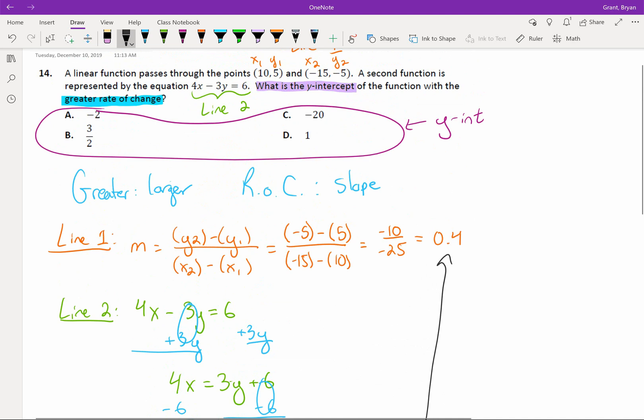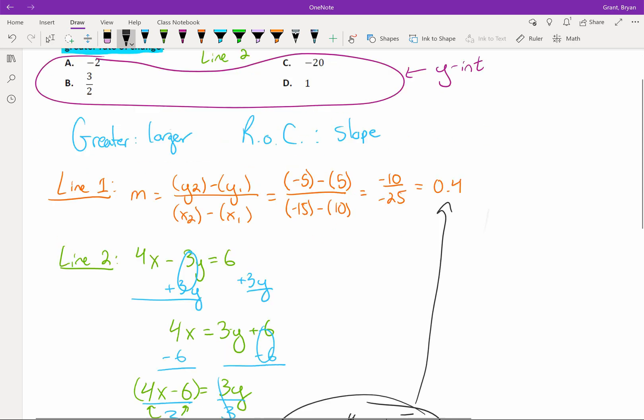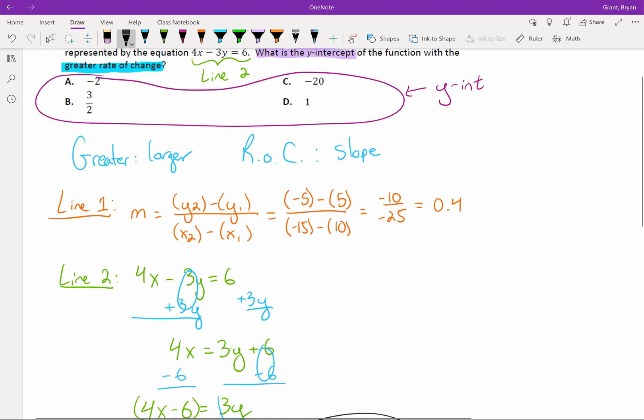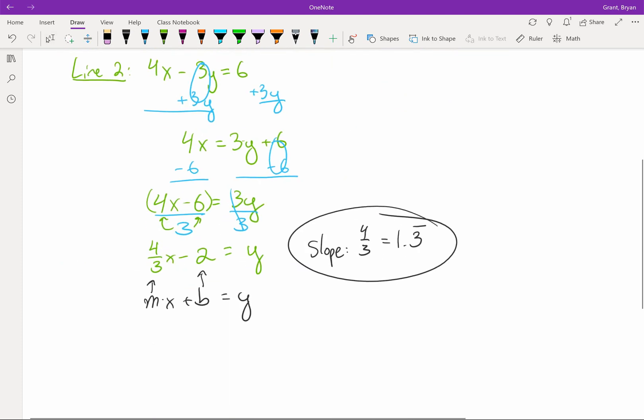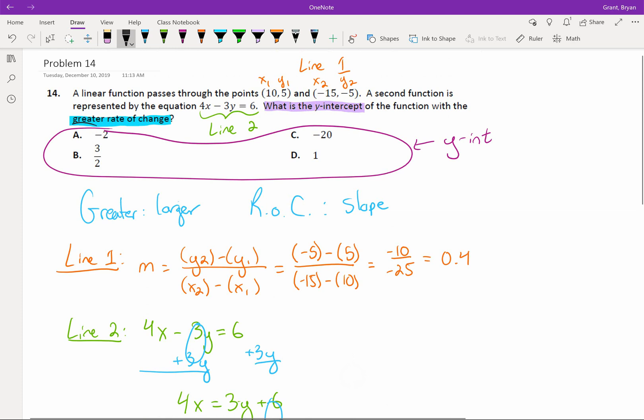So, am I done? We need to take a look at this, and realize that the y-intercept is what's being asked for of the function with the greater rate of change. The greater rate of change is the bigger slope. We found the bigger slope. And now we just need the y-intercept, as my dog squeaks away at a squeaky toy in the background. The y-intercept is found in this equation right here. The other reason that it was useful to isolate y is because it told us the y-intercept. Now, not only do we know the slope, we know the y-intercept, and we can probably answer the question. The y-intercept is negative 2, which in this case is A.